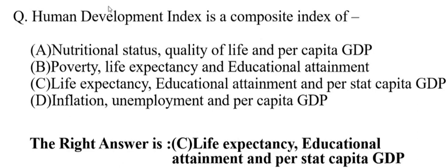Today's question is: Human Development Index is a composite index of — a) Nutritional status, quality of life and per capita GDP; b) Poverty, life expectancy and educational attainment; c) Life expectancy, educational attainment and per capita GDP.